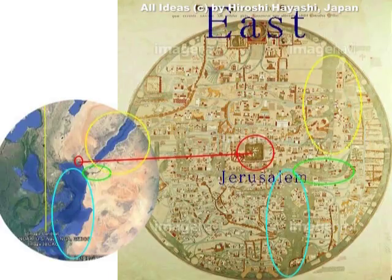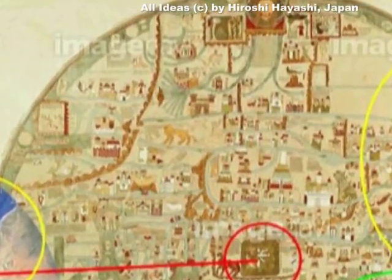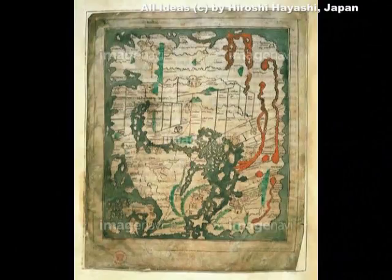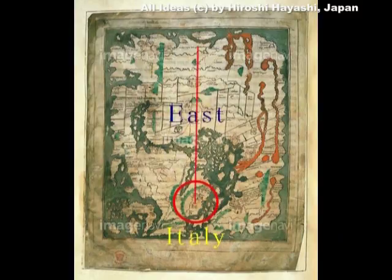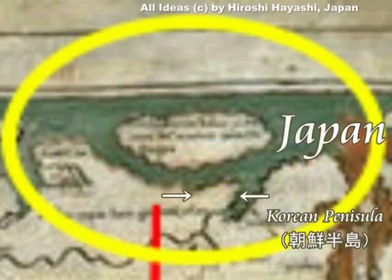中心がエルサレムということになります。ブルーの部分が地中海ということになりますね。黄色い部分がインド洋あたりということになるんでしょうか。そして上が東、つまり東洋、すなわち日本ということになります。ここに描かれているのが太陽のマーク、すなわち日本ということになりますが、これだけでははっきりしませんね。別の地図で見てみます。真上の地、真東に小さな島が描かれています。私はこれが日本と判断しました。